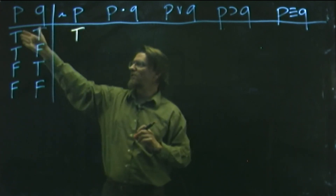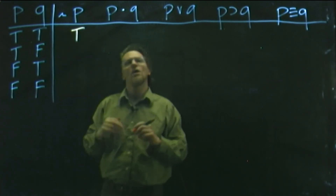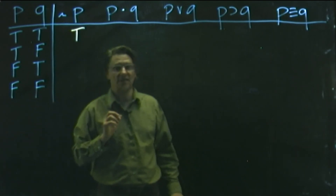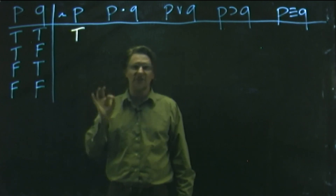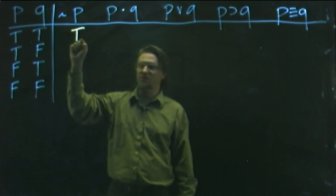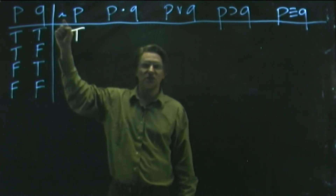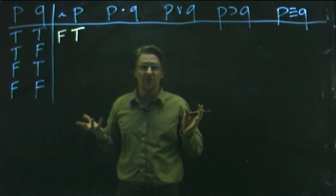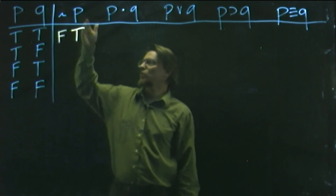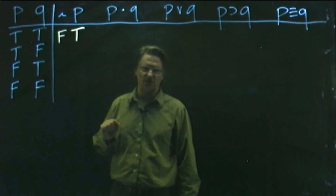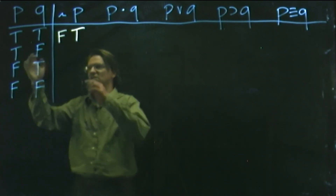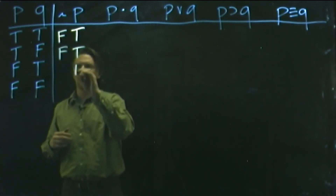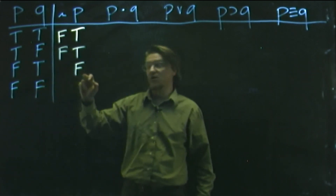Consider the possibility that P is true, as in the first row. What happens when P is true with the tilde? If I told you that Everett is in the state of Washington — which is a true statement — then to say it's not true that Everett is in the state of Washington would be false. So when you have true under P, the tilde makes that true become false. It flips it to the other value. In the second row, P is still true, so the tilde again would make that false.